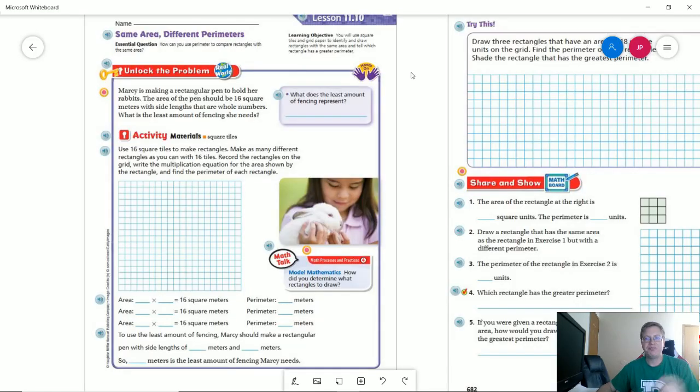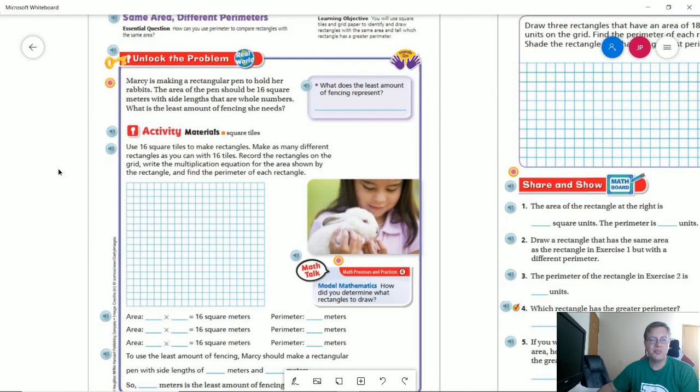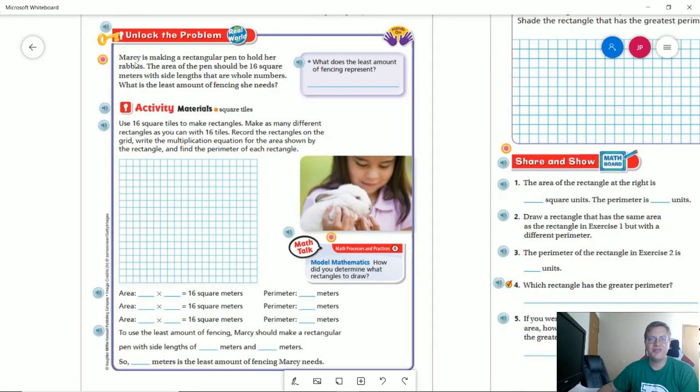So let's go ahead and take a look at our problems. Today we are going to be working with rectangles that have the same area but different perimeters. One of the examples that we might use is to try to figure out how we are going to make a fenced-in area that covers the largest amount of area while using the least amount of materials to make the fence.